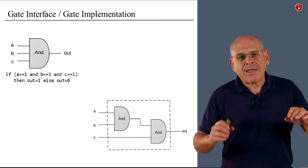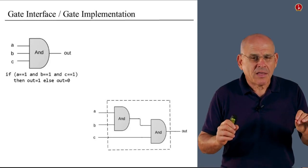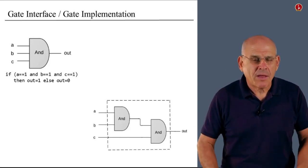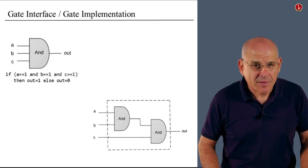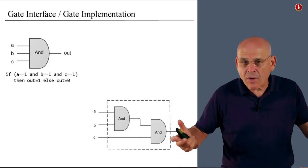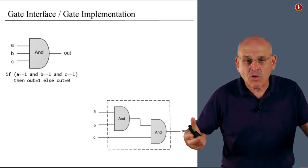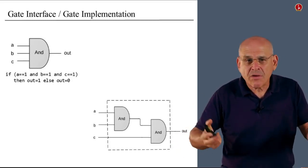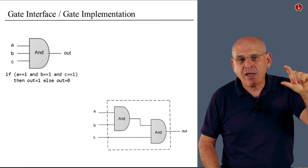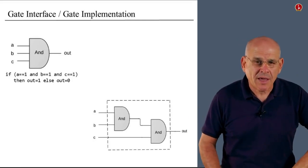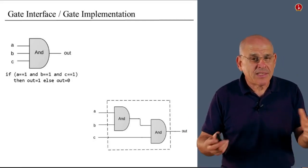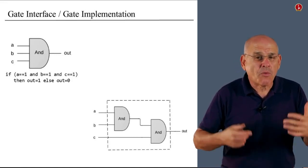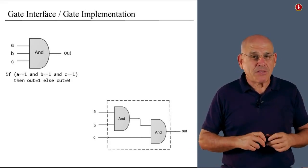Now, the interface of the gate is unique. There's only one way to describe the gate's functionality. Otherwise, if there's more than one way, either you're not describing it well, or you're confusing the user because there should be only one unique way to describe what the gate is supposed to do.